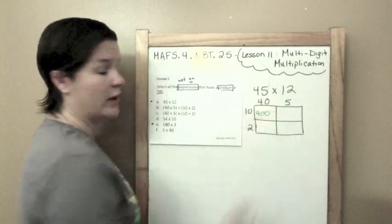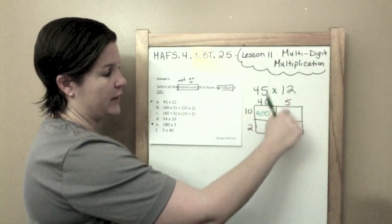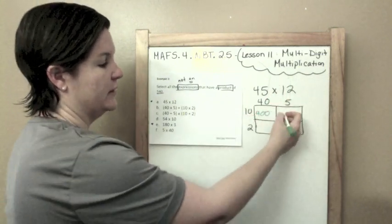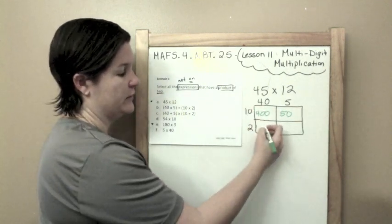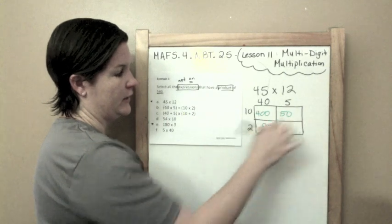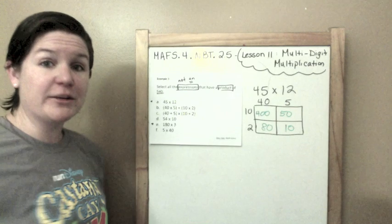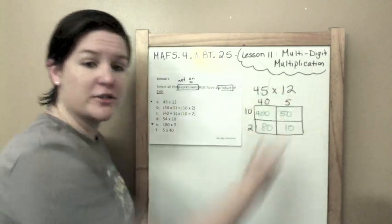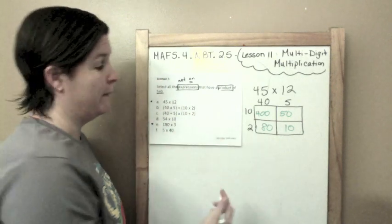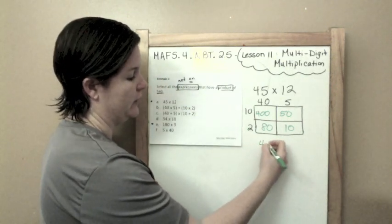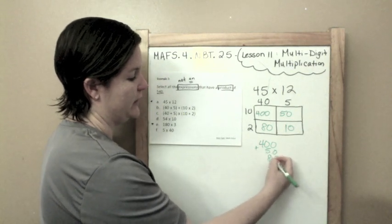10 times 40 is 1 times 4 is 4, and we have two zeros, so 400. In this box, I'm doing 10 times 5, because that's where they meet. That would be 50. 2 times 40 is 80, and 2 times 5 is 10. I'm not done yet. Now I have to add up these numbers. I found part of the products. Now I need to add them together to include the full product to see if I get 540.